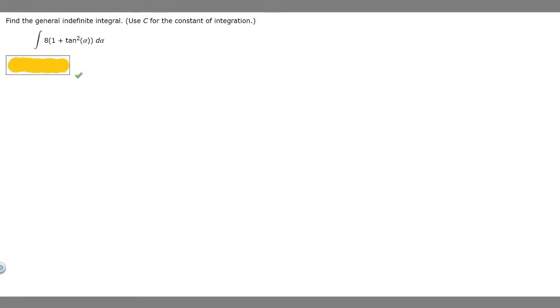In this problem we're told to find the general indefinite integral, use C for the constant of integration, and we're given the integral 8 times 1 plus the tangent squared of alpha, and I'm just going to call it A, times dA.